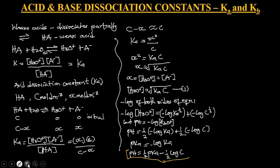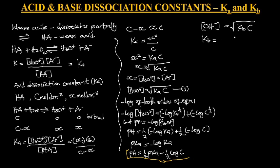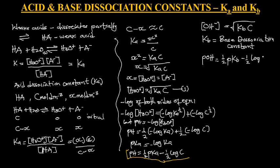Now, what if it is a weak base? For a weak base, the OH- concentration will be equal to the square root of KB times C, where KB is the base dissociation constant. When we want to write the equivalent expression for pH, then POH equals 1 over 2 PKB minus 1 over 2 times log of the concentration of the base.